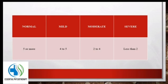The lumbar spine flexion limit is characterized as normal if the difference is 5 cm or above, as mild if the difference is between 4 to 5 cm, as moderate if the difference is between 2 to 4 cm, and as severe if the difference is less than 2 cm.